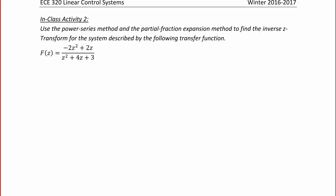In Class Activity 2, use the power series method and the partial fraction expansion method to find the inverse Z transform for the following transfer function. First we'll do the long division method, so I'm going to have negative 2Z squared plus 2Z divided by Z squared plus 4Z plus 3. The first term is going to be negative 2, giving negative 2Z squared minus 8Z minus 6.